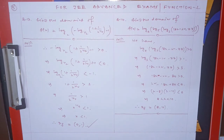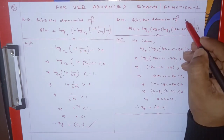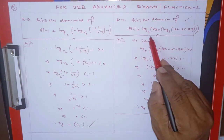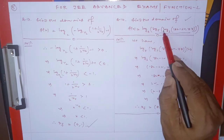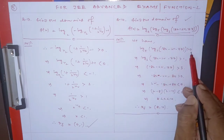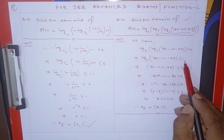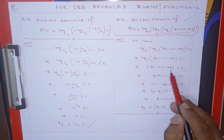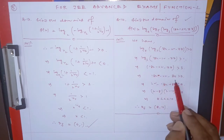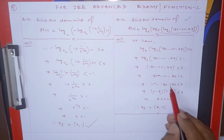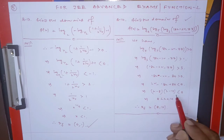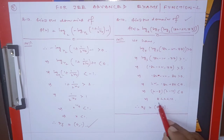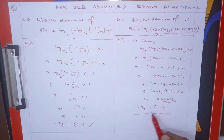Find the domain of f(x) = log₄(log₅(log₃(18x - x²))). For the outermost log to be defined, the inner expression must be positive — so log₅(...) > 0, meaning the inner argument > 5⁰ = 1, and then > 3¹ = 3. Rearranging 18x - x² > 3 gives x² - 18x + 80 < 0, factoring as (x-8)(x-10) < 0. Therefore the domain is (8, 10).